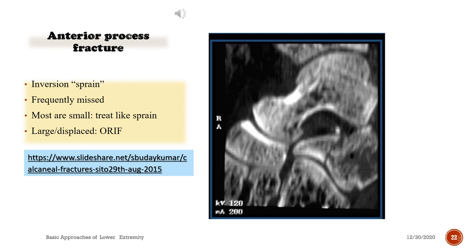Anterior process fracture occurs due to forceful inversion-type sprain. It is frequently missed. Most are small and treated like a sprain. If large and displaced, open reduction and internal fixation is necessary.